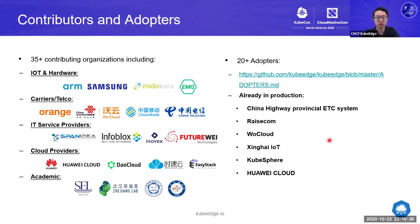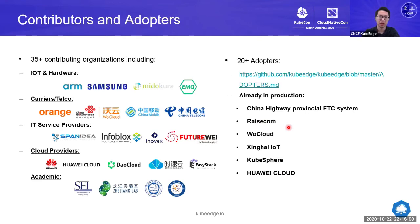For use cases, we currently have more than 20 adopters. Some production adoptions include the China Highway ETC system. RISCOM uses KubeEdge in their factory to improve production line safety. Xinhai IoT built with KubeEdge to develop a smart campus solution.